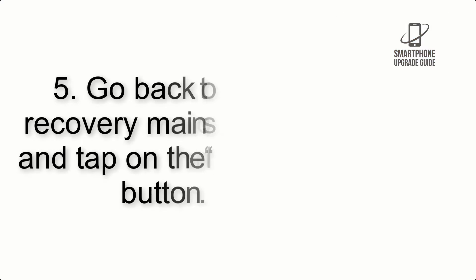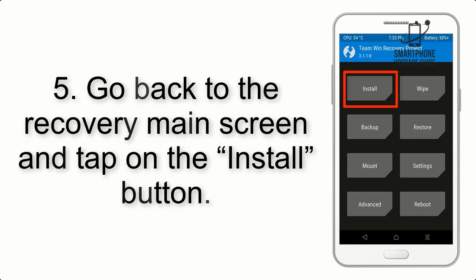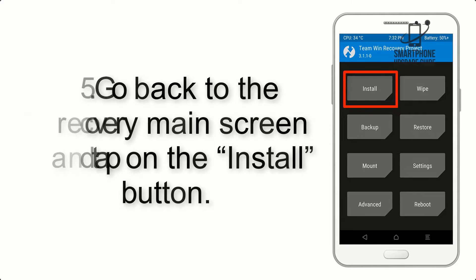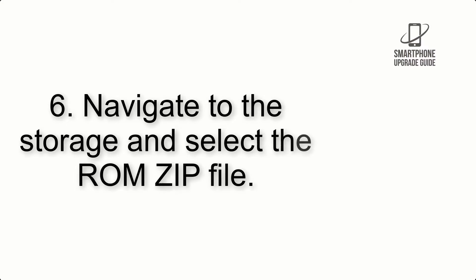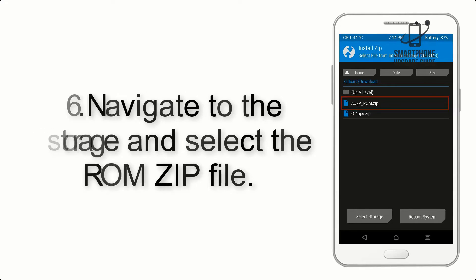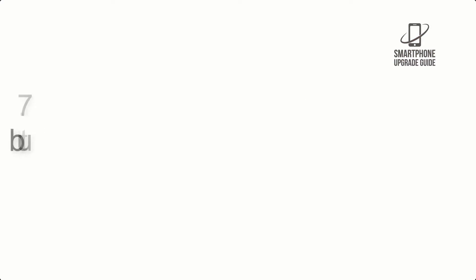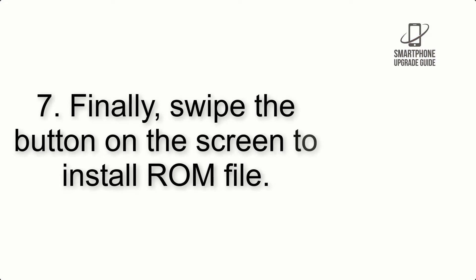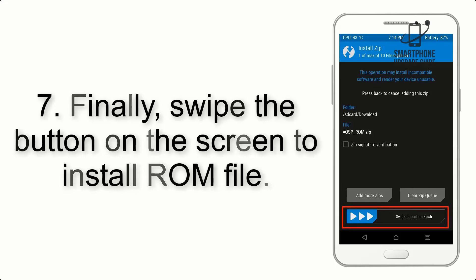Step 5: Go back to the recovery main screen and tap on the Install button. Step 6: Navigate to the storage and select the ROM zip file.